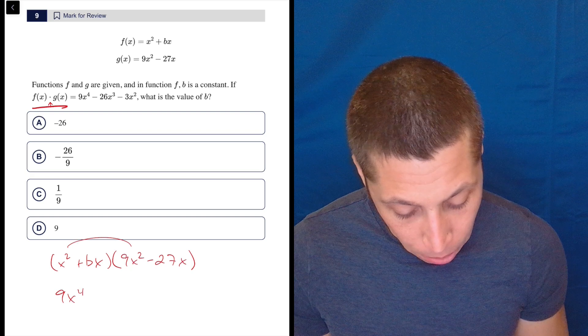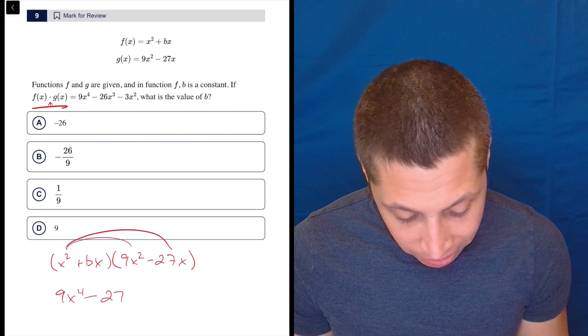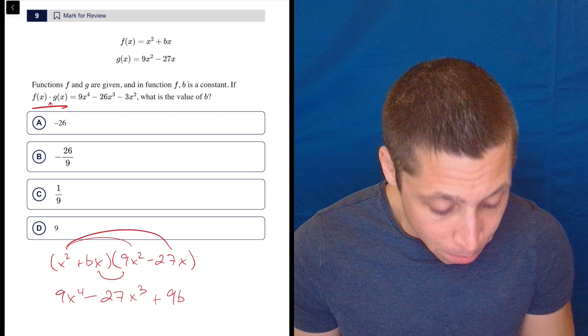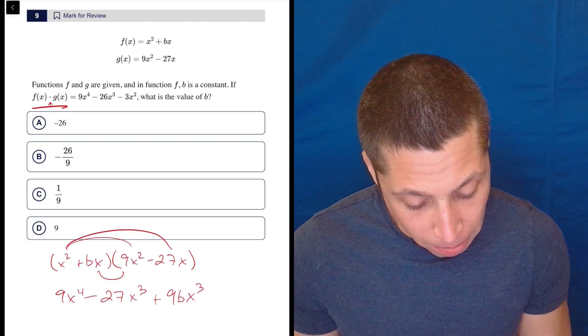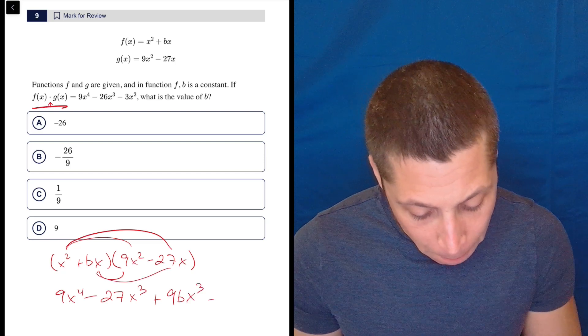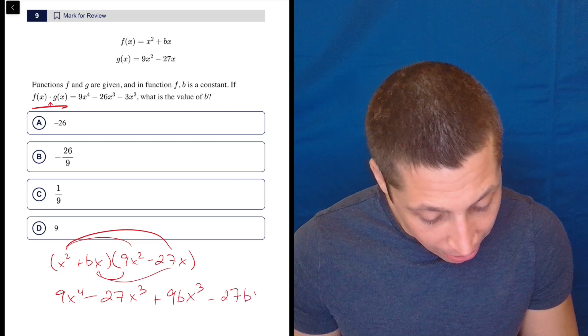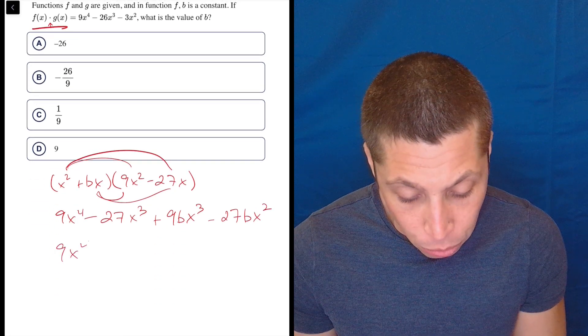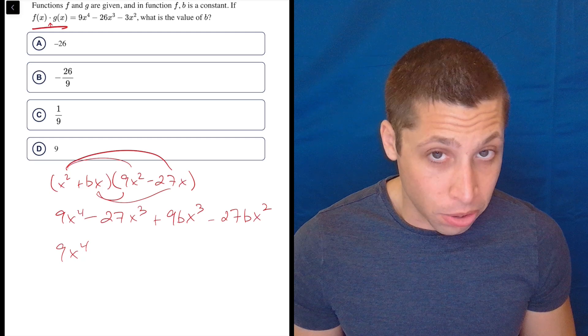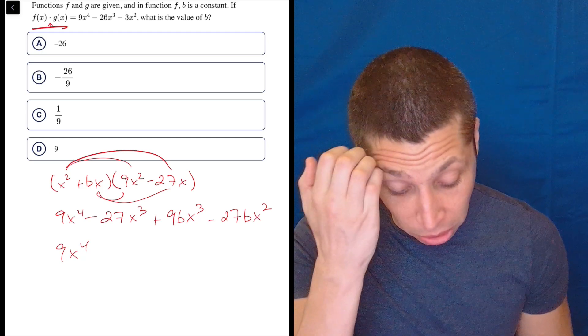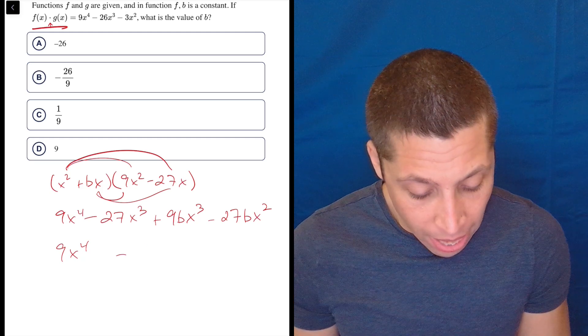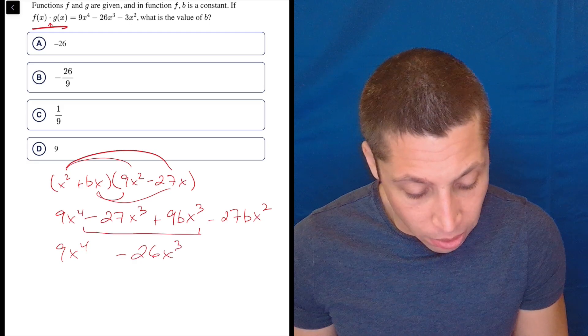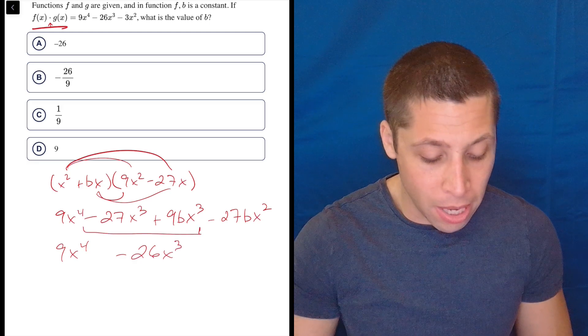So this is going to be 9x^4 minus 27x^3 plus 9bx^3, so we can't combine those easily, and then minus 27bx^2. Now the reason I didn't write out the other thing is I want to see how the two compare. So the 9x^4s compare easily because they're the only x^4 terms. Now we have one x^3 term in here, and so that means that these two things together, we can't combine them right now because we don't know the b,